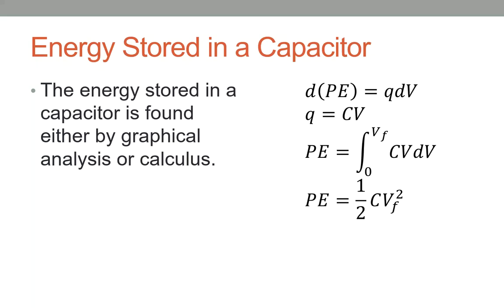The potential energy stored is one-half capacitance times voltage squared, where the voltage is the voltage difference from one side to the other. Or you could write it as one-half charge squared over capacitance, where the charge is the charge on one plate — one plate being positive and one plate being negative. We had two ways of writing it that we worked out in class on Wednesday.